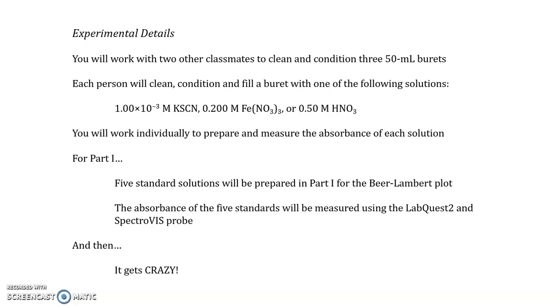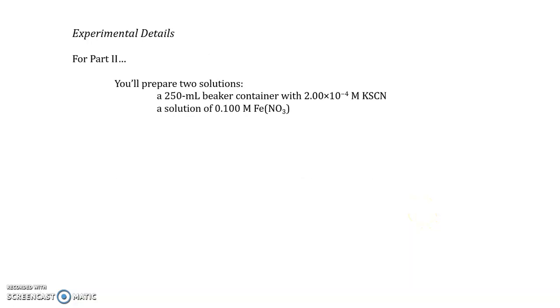After part 1, it all gets kind of crazy. In part 2 of the experiment, you'll find yourself preparing two solutions: a 2×10⁻⁴ molar solution of potassium thiocyanate in a 250-milliliter beaker, and separate from this, a solution of 0.1 molar iron(III) nitrate.